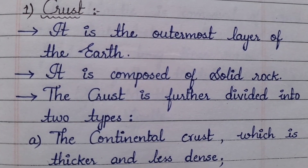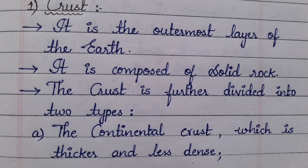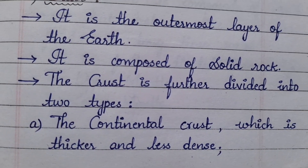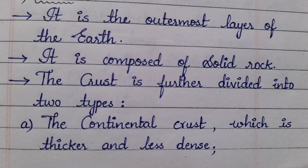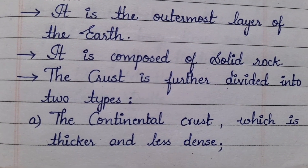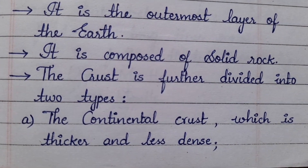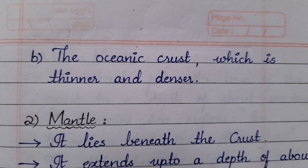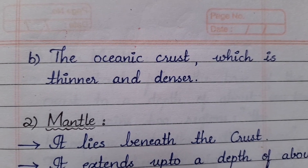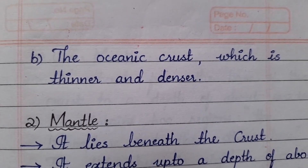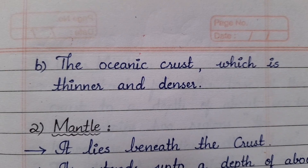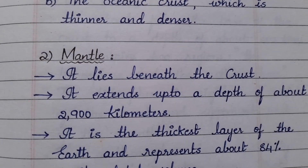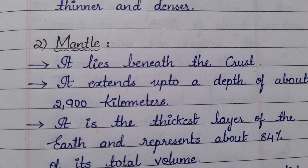Coming to the first layer — the crust. It is the outermost layer of the earth and it is composed of solid rock. The crust is further divided into two types: firstly, the continental crust, which is thicker and less dense, and secondly, the oceanic crust, which is thinner and denser.